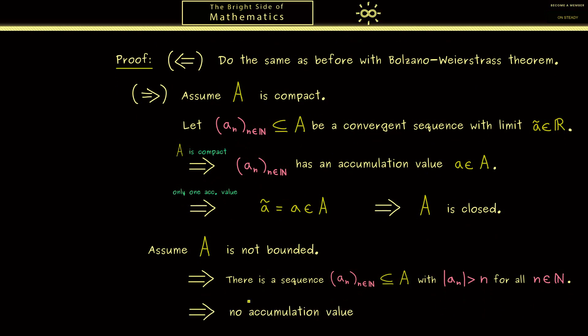And because of this property such a sequence can't have any accumulation value. This is not hard to show but maybe it's a good exercise for you. Of course the important thing is the result. We have a sequence that has no accumulation value. Therefore the set can't be compact.